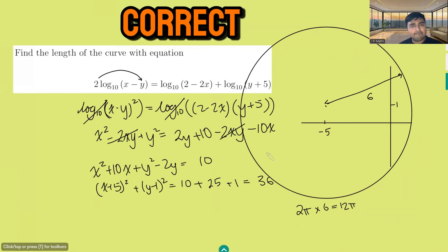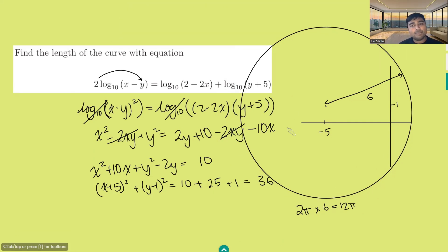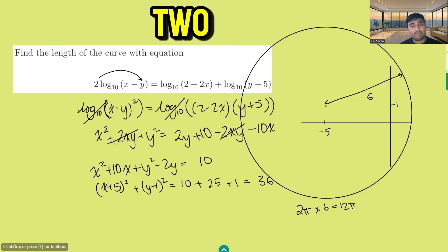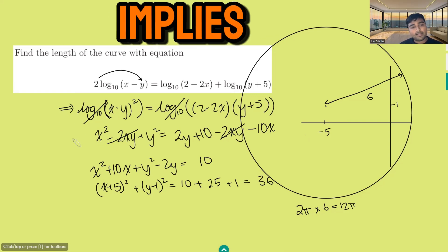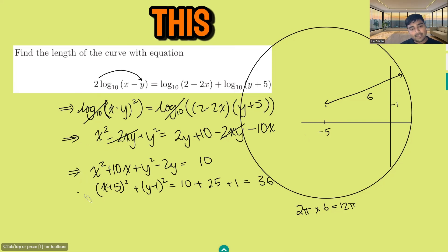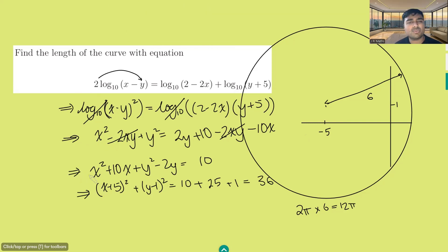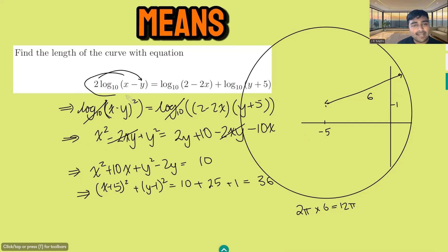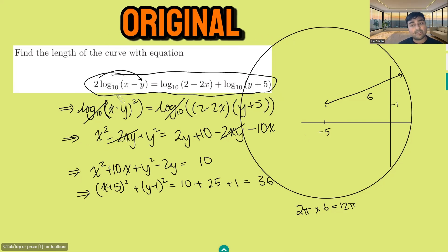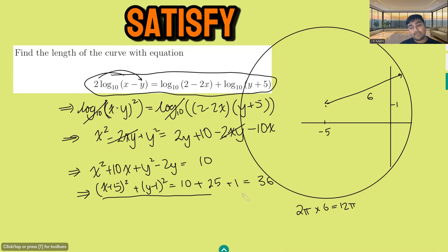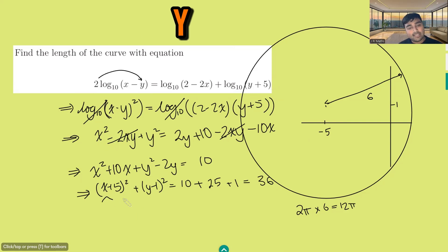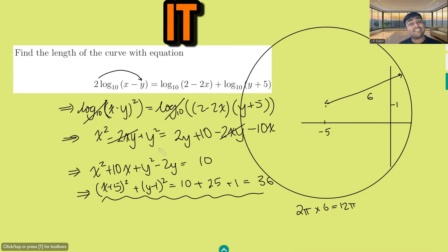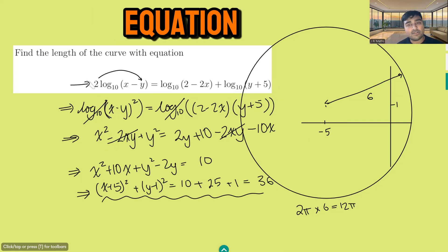That's not quite correct. Why not? Because not all of these implications are two-way implications. Essentially, we started with the original equation and each step implies the next. That means any x, y values satisfying the original equation must satisfy this circle equation. However, the reverse is not true — just because x and y satisfy the circle equation does not mean they satisfy the original equation.